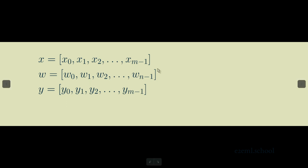And then our kernel w is going to have n elements. Our input and output, our x and our y, are going to have m elements.